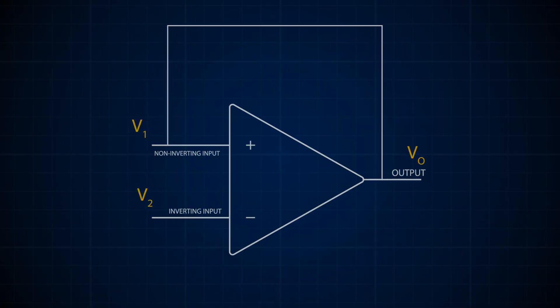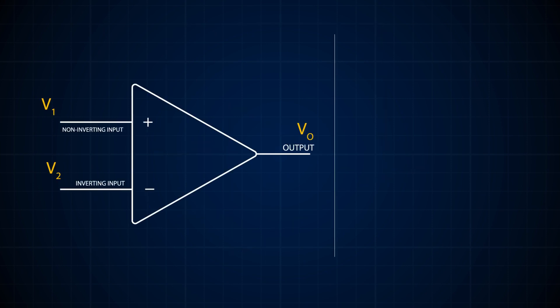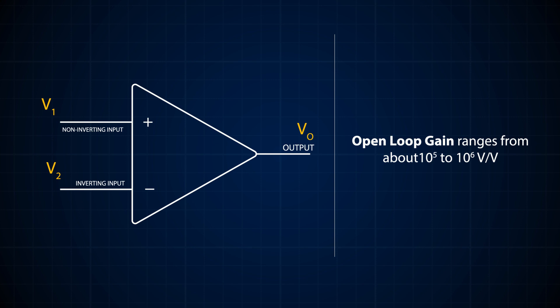Now let's talk about the most common term you hear when talking about op-amps: the open loop gain. It's important to understand what loop we're referring to — a connection between either of the inputs and the output. Therefore, the open loop gain is simply the gain when the loop is not closed. It usually ranges from 10^5 to 10^6 for most amplifiers, but it's also limited by the biasing voltages.